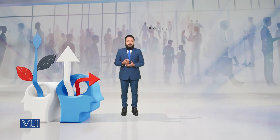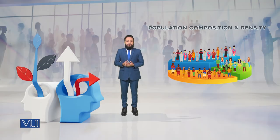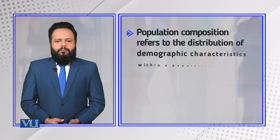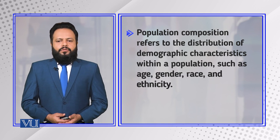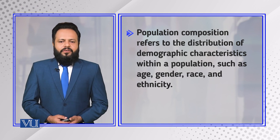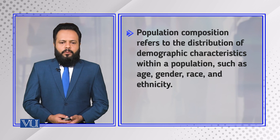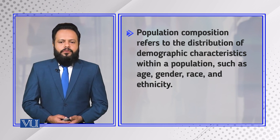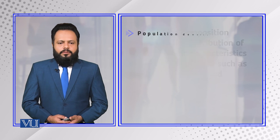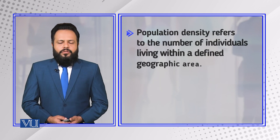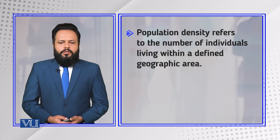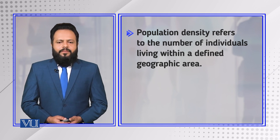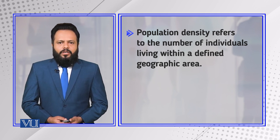Dear students, in this module we are going to discuss population composition and population density. Population composition refers to the distribution of demographic characteristics within a population such as age, gender, race and ethnicity, whereas population density refers to the number of individuals living within a defined geographic area.